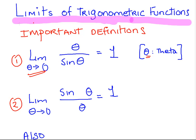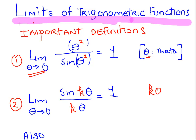These are two of the fundamental ones, but there are extensions of these. For example, we could have theta squared over sine squared theta. Also, we could have coefficients — for example, sine of k theta over k theta. Vice versa, we could have k theta over sine k theta; the limit of that is also 1. The basic two are the ones I had there previously, and we're going to refer to them as much as possible.